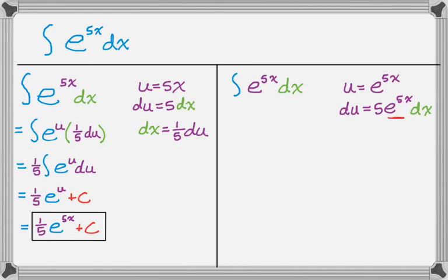And then look at this. So I have e to the 5x in the original. I have a dx in the original. The only thing on the right-hand side there that I don't have in the original is a 5, so I'm going to move it over to the other side and get 1 fifth du is e to the 5x dx. And now I'm going to actually substitute for e to the 5x dx.